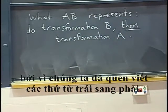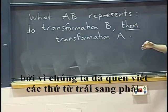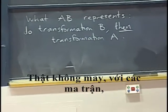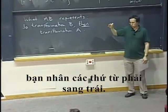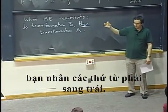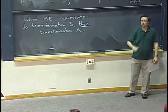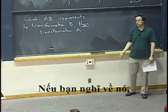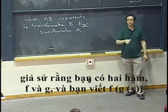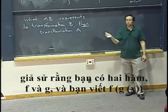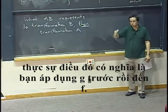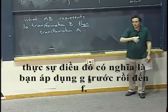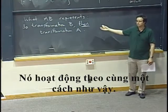That's a slightly counterintuitive thing because we are used to writing things from left to right. With matrices, you multiply things from right to left. If you think about it, when you write two functions f and g, you write f of g of x — it really means you apply first g, then f. So it works the same way.